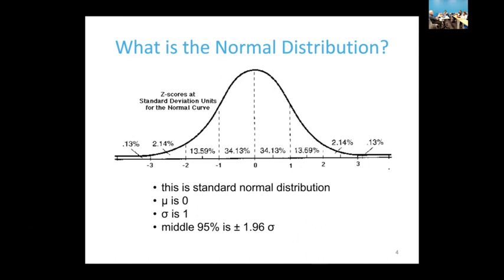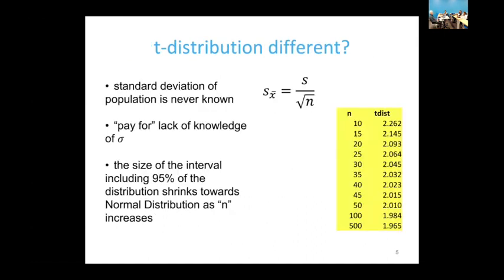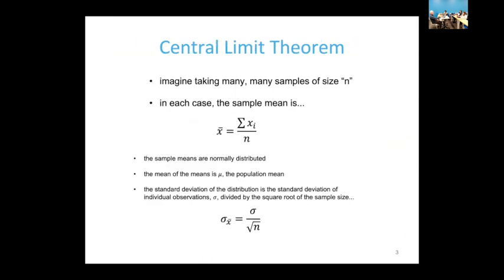The middle 95% of the normal distribution is plus or minus 1.96 — about two times the standard deviation among individuals. You've heard of the normal distribution, but you've also heard of the t-distribution. Look at the formula: it looks kind of the same.